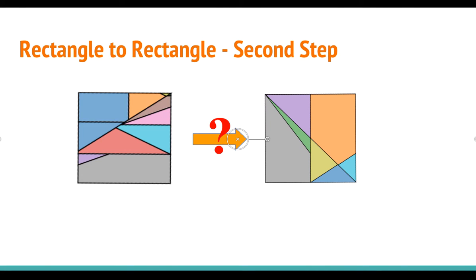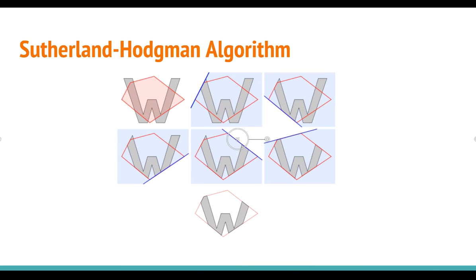So now we have two squares of the same area. How do we transform one into another? To do that, we will use an algorithm called the Sutherland-Hodgman algorithm.